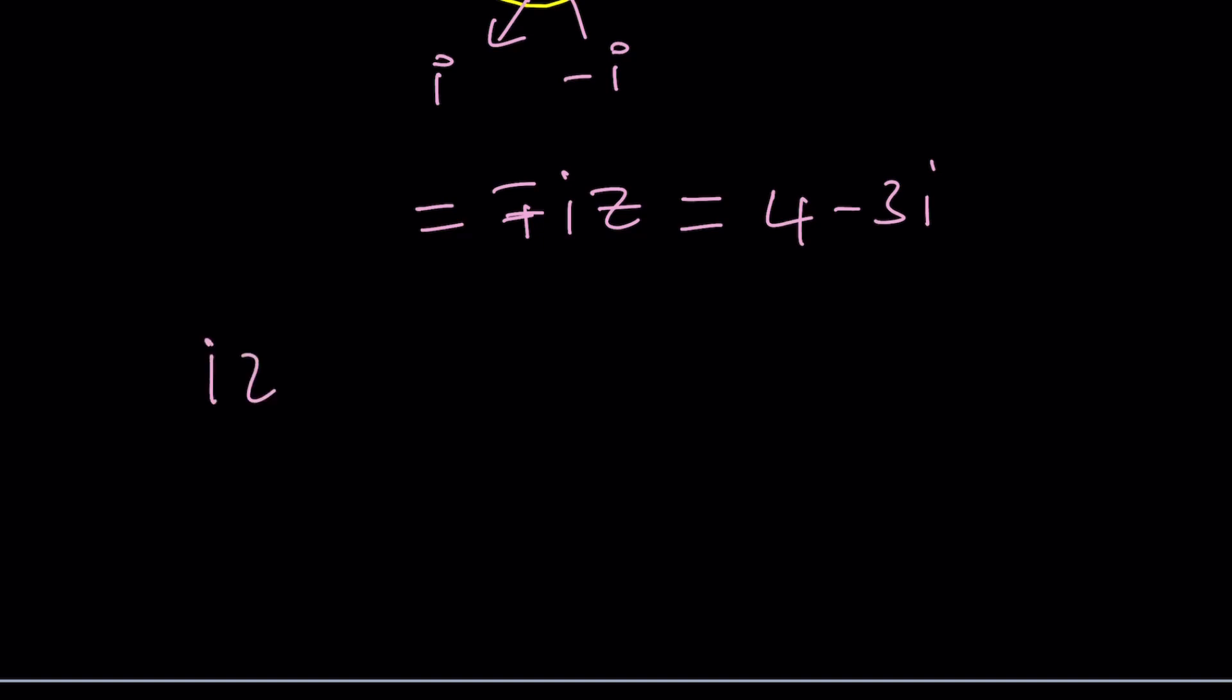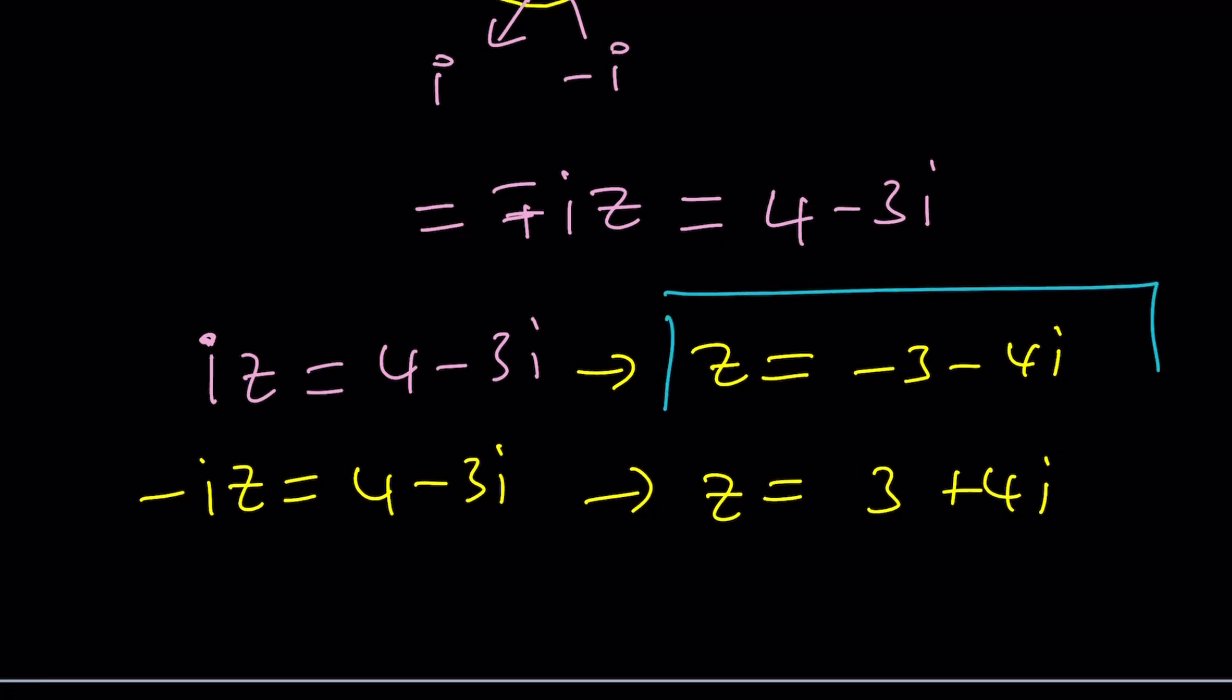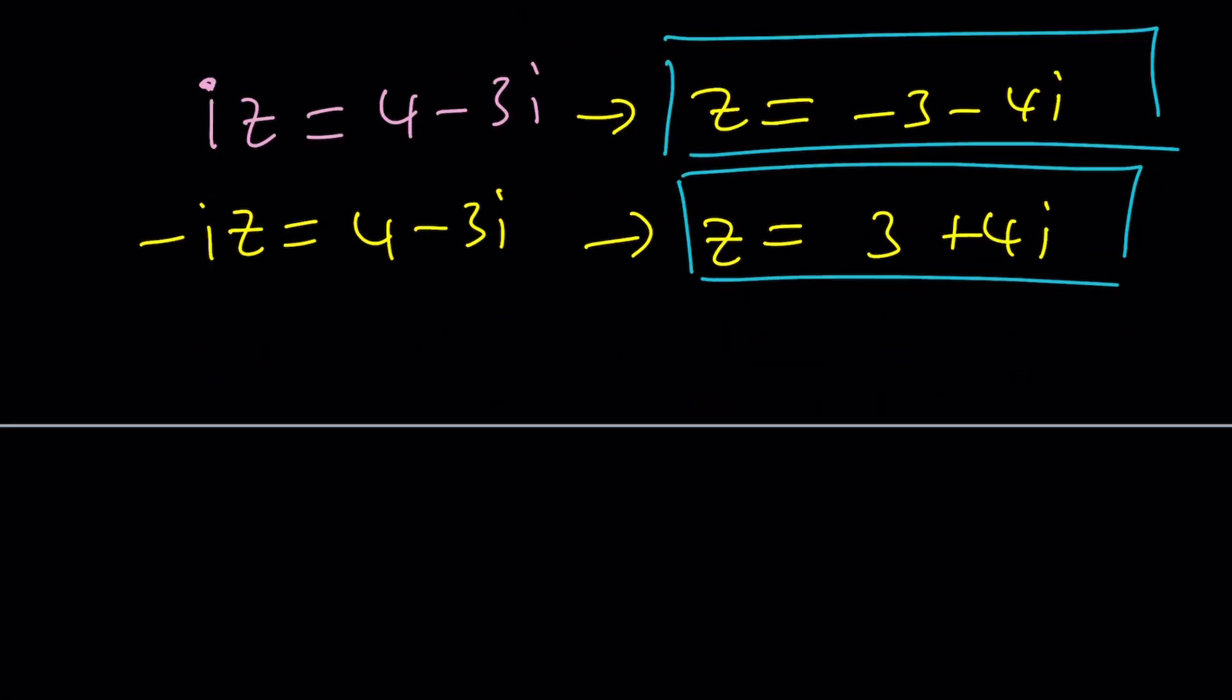We're going to split it up into two cases. If i z is equal to 4 minus 3i, multiply both sides by negative i. Don't divide by i. Some people, including black pen and red pen, do that. That's perfectly fine, but I multiply by negative i instead. z becomes negative 3 minus 4i. And if negative i z is equal to 4 minus 3i, it's just going to be the opposite. So z will be 3 plus 4i. So there seems to be two solutions. Do you think both of them are going to work? We're going to talk about some issues after the second method.